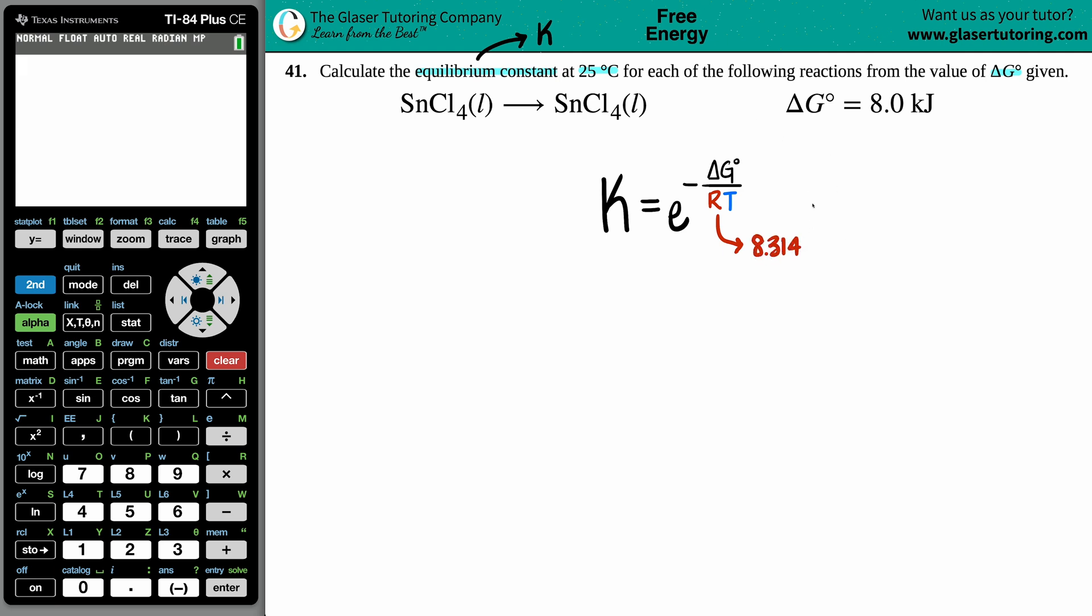If we use 8.314, the units are joules per mole times kelvin. So this will tell you the units of what the other variables should be in. For example, the temperature—there's a kelvin here, so I have to have my temperature in kelvin.